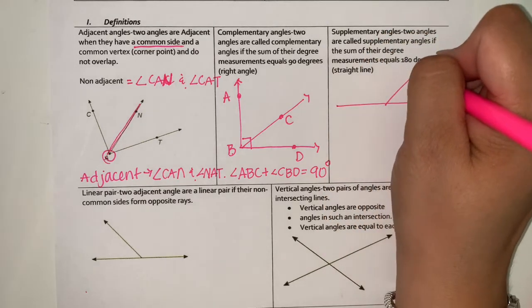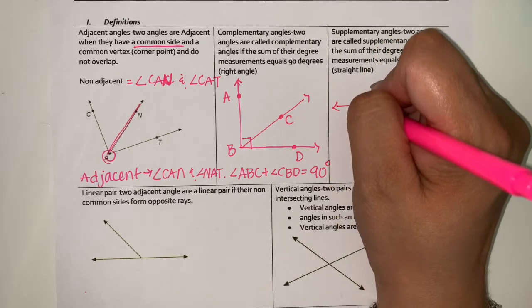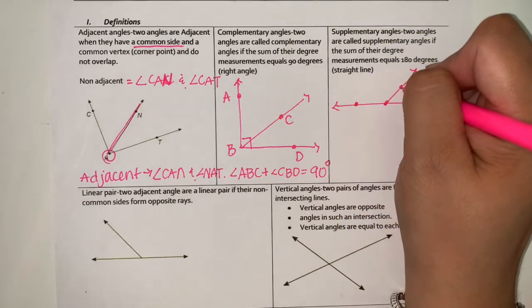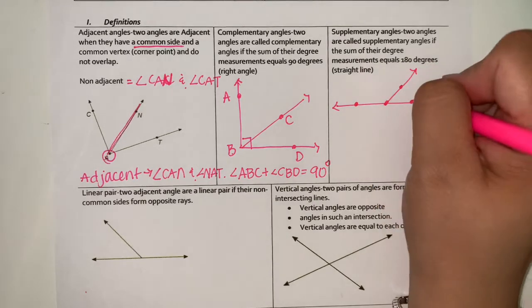You can have all sorts of different angles that equal supplementary, but remember you can only have a set of two.